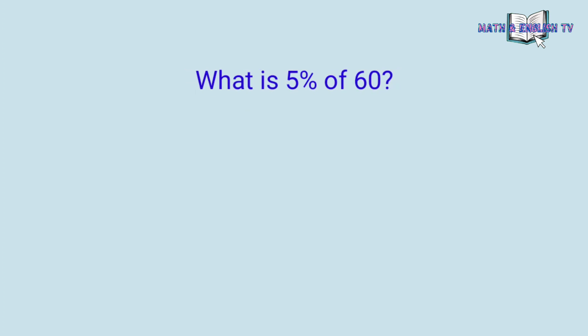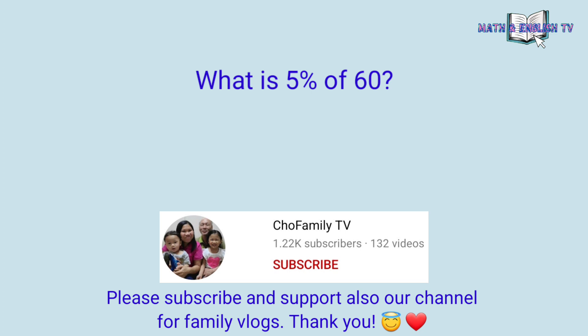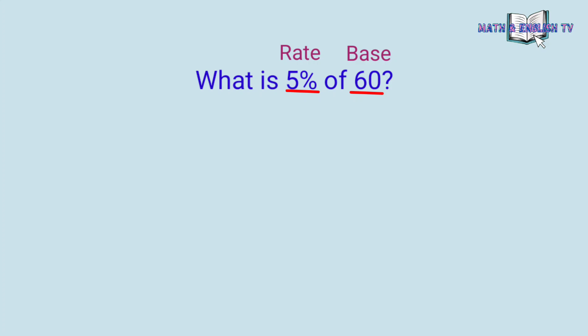Ngayon, sagutin natin ang tanong na ito. What is 5% of 60? Ilan kaya yung 5% ng 60? Para makuha natin yung sagot sa tanong na ito, kailangang i-identify natin yung elements ng percent na nandito sa question. Itong 5% meron siyang percent sign. Ang tawag natin dito ay rate. At ito namang 60, sumunod siya sa phrase na percent of. Kaya, ang tawag natin dito ay base. So, ang element na wala dito ay ang percentage.